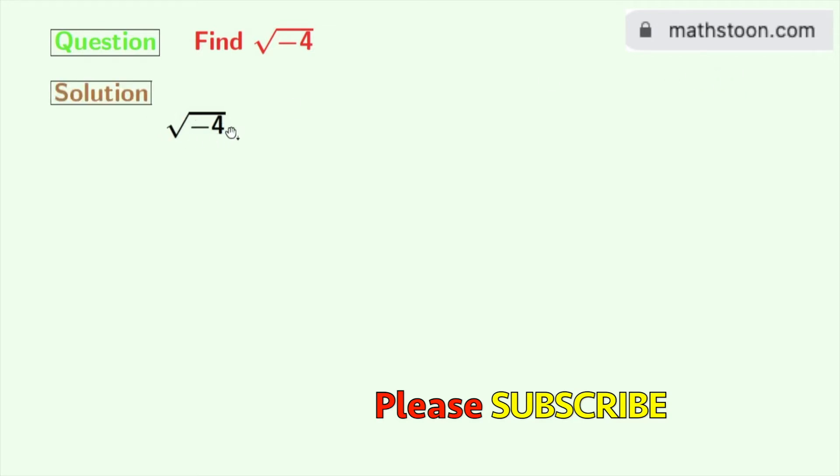This is square root of minus 4 and we will rewrite this as square root of 4 times minus 1. Now this can be written as square root of 4 times square root of minus 1.